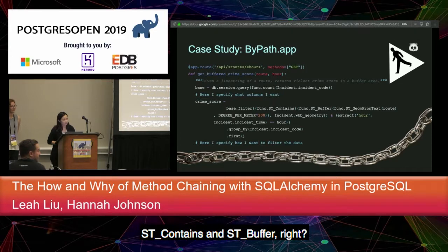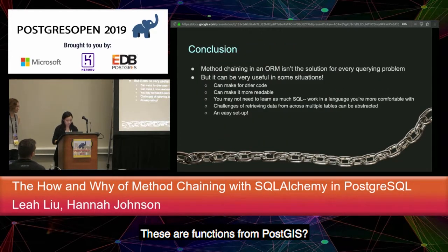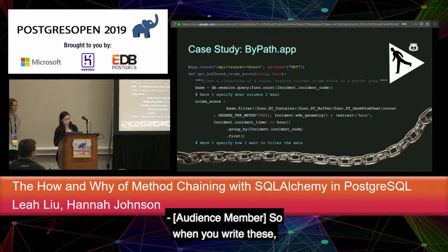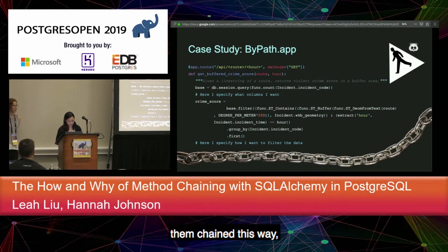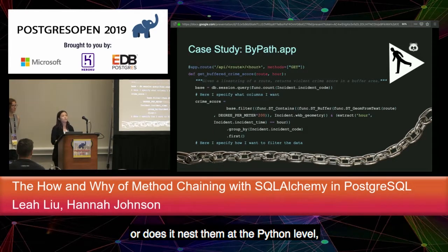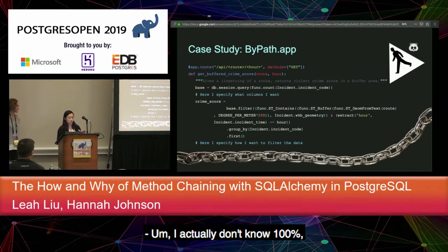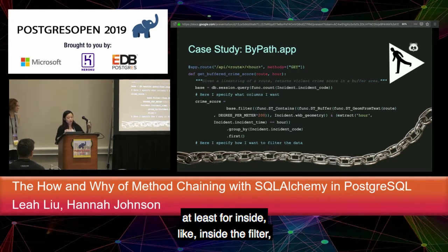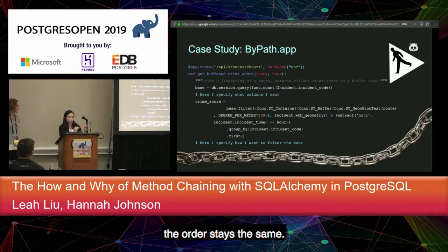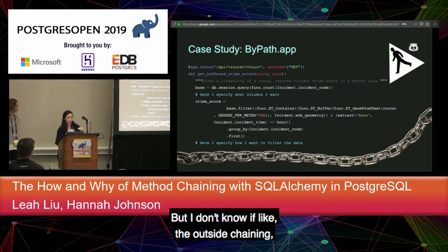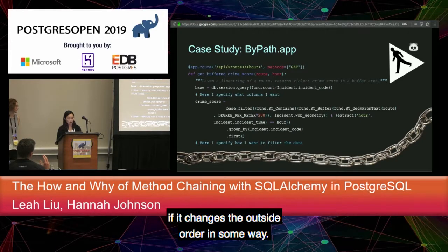Another audience question about the ST_Contains and ST_Buffer functions used in the query — these are PostGIS functions. Does SQLAlchemy turn these into actual nested function calls in SQL, or does it handle them at the Python level? The speaker notes they're actually using GeoAlchemy on top of SQLAlchemy, which is a library catered to PostGIS that understands PostGIS commands. The order inside the filter stays consistent with what was written.